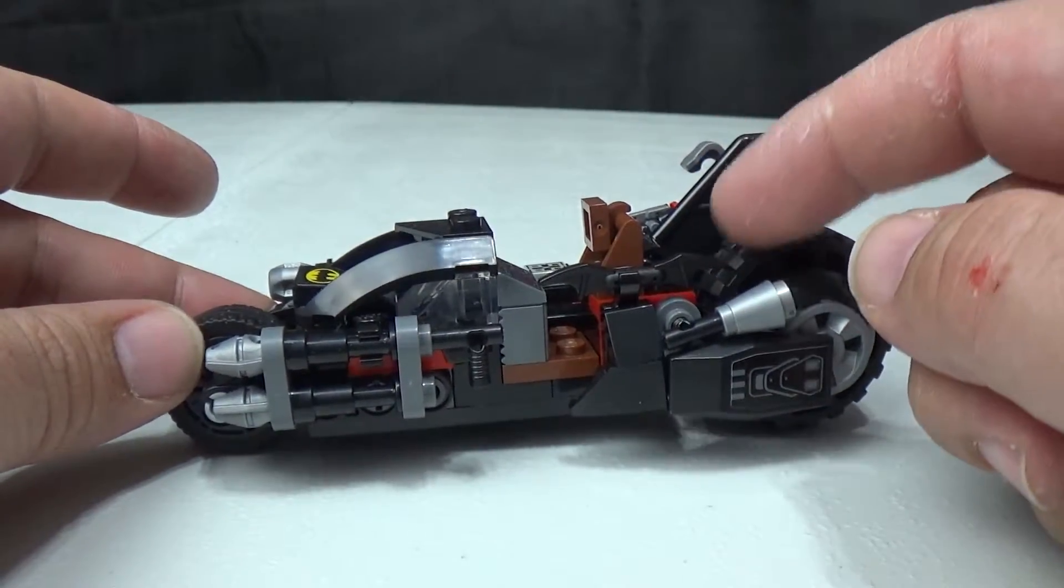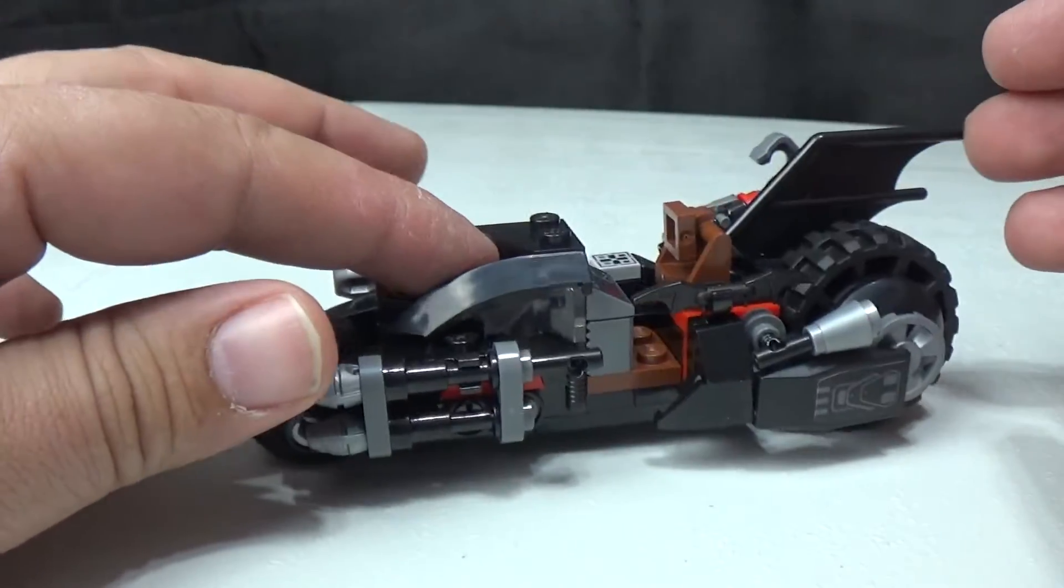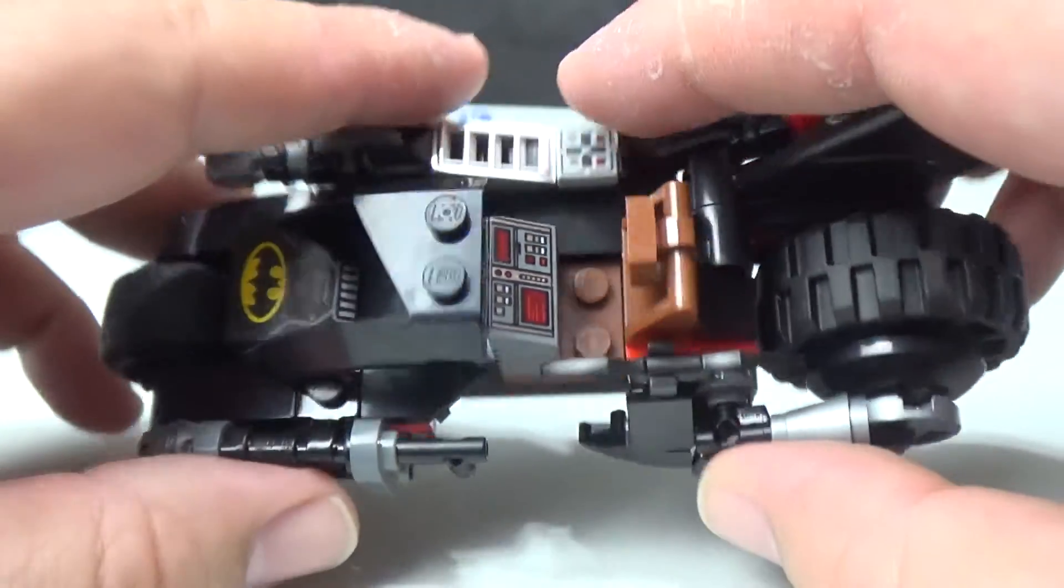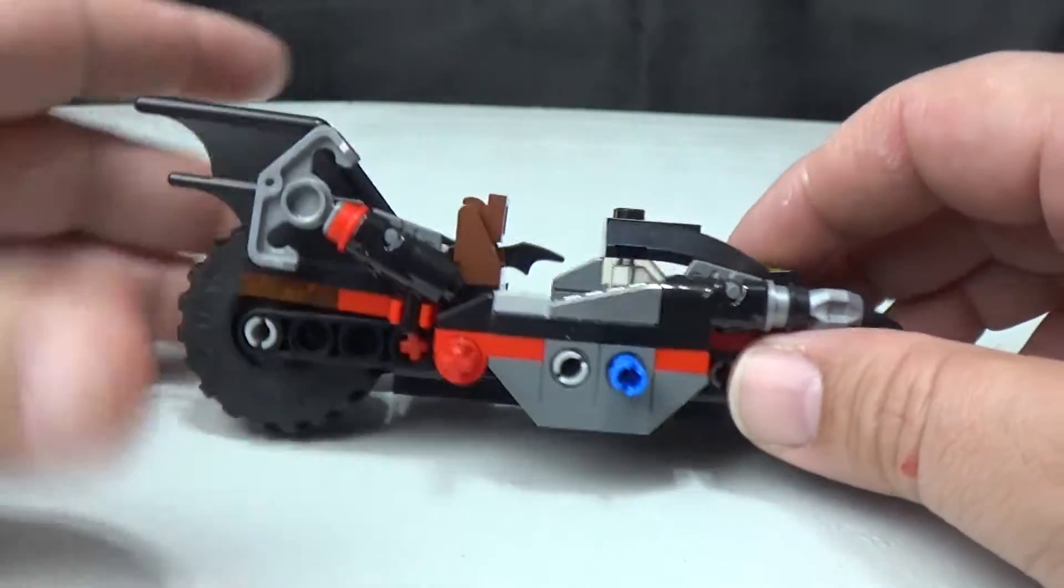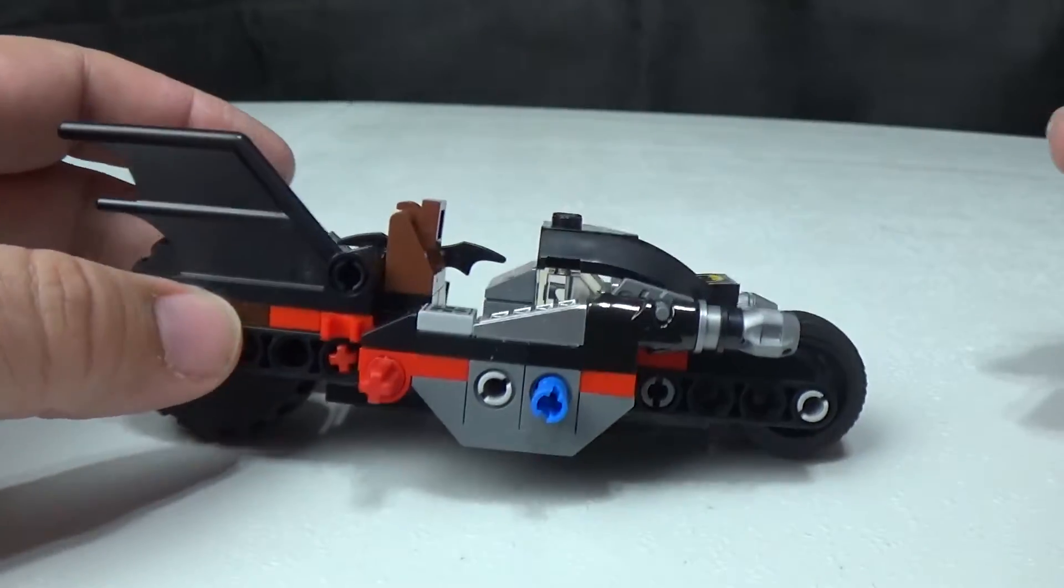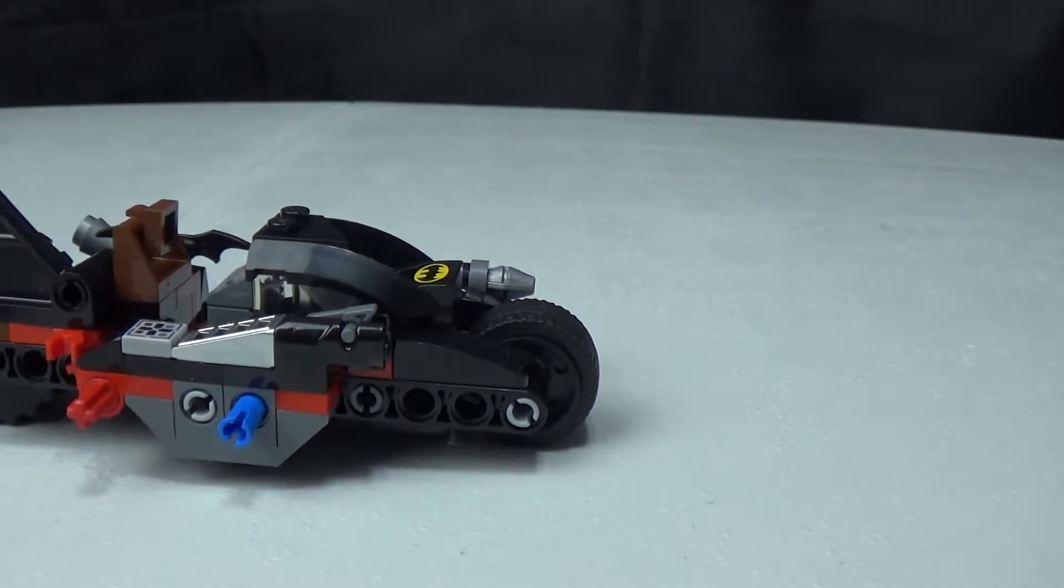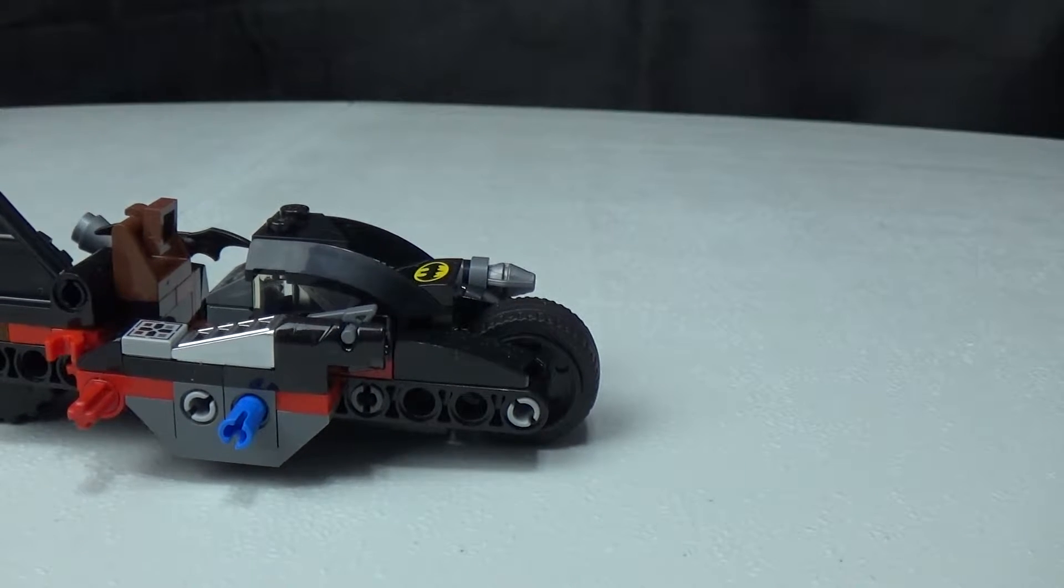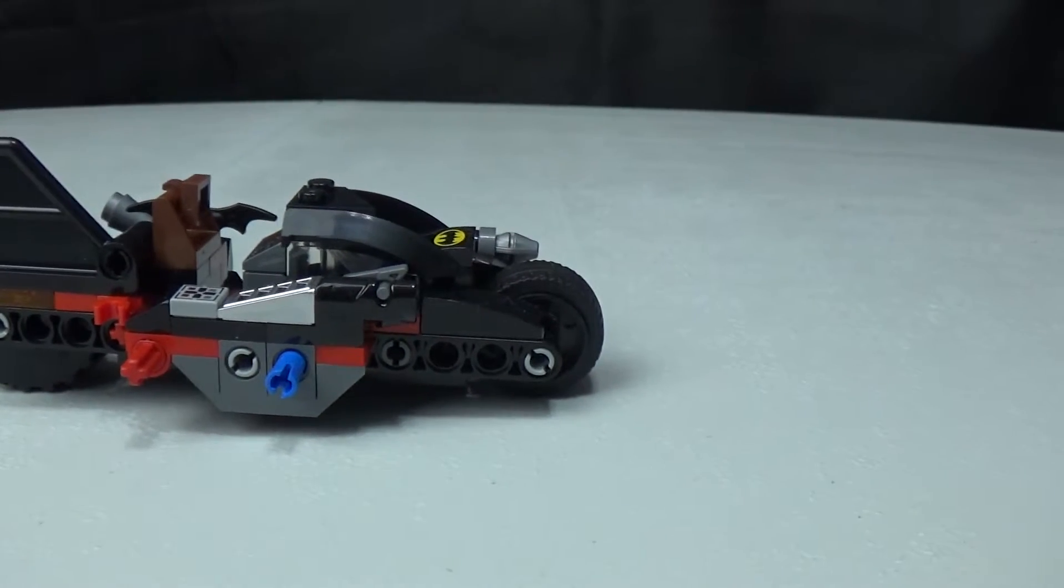This one rolls better for some reason. You can see that we have storage for a grappling hook, which is different. We also have a little gun here that shoots a missile that I just lost. Let me get that missile real quick because it's going to bother me the rest of the review.